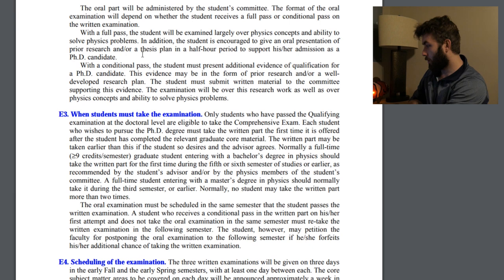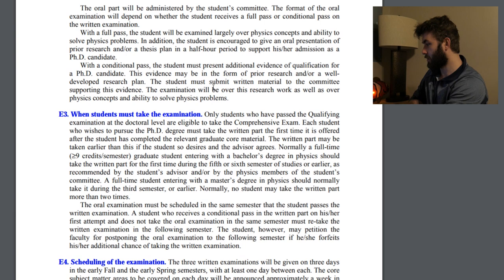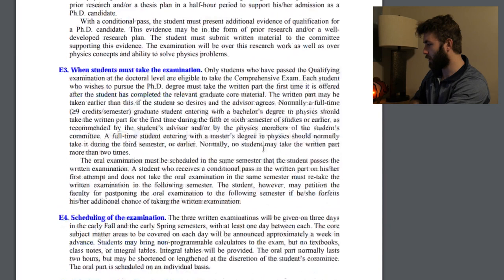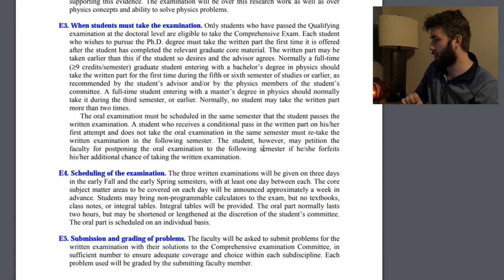With a conditional pass — that's the 'yes but' — the student must present additional evidence of qualification for PhD candidacy. This evidence may be in the form of prior research and/or a well-developed research plan. The student must submit written material to the committee supporting this evidence, and the exam will cover this research work as well as physics concepts and problem-solving. It makes sense — if you didn't quite pass the test but didn't quite fail it, you can give a bit more reasoning as to why you should still be considered a PhD candidate.